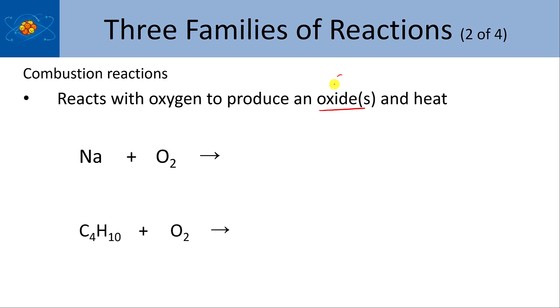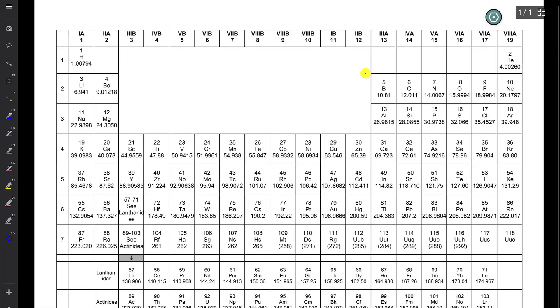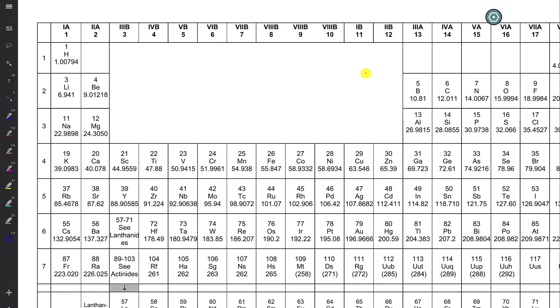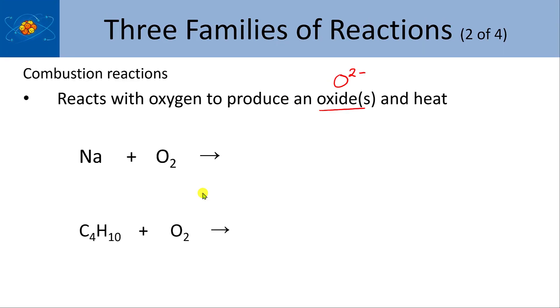So oxides have oxygen 2- in them. And the alkali metals, because of their position in the periodic table, this group 1 here, all have plus 1 charge. So if we're taking sodium, sodium's got a plus 1 charge.